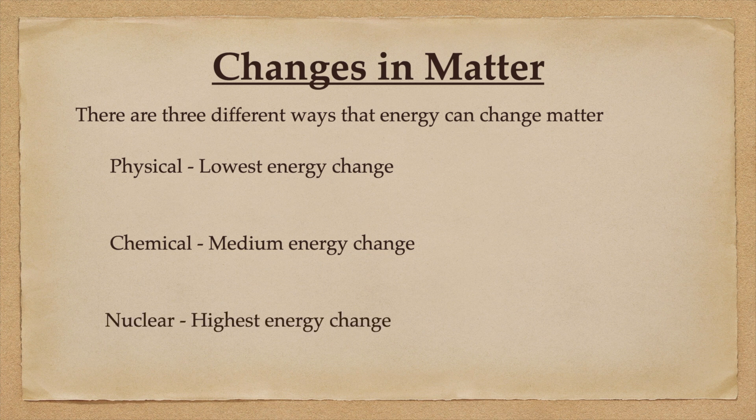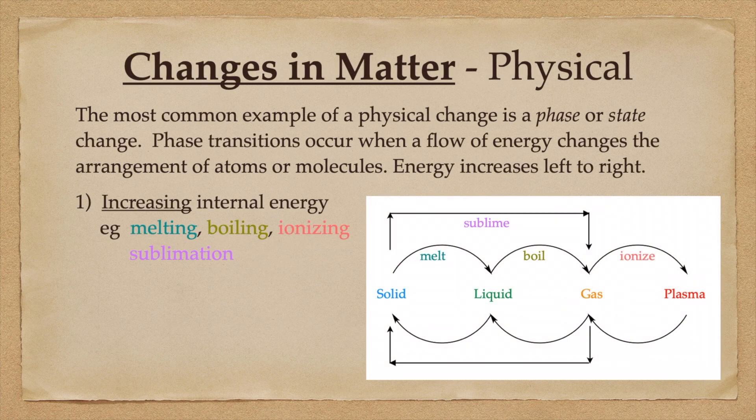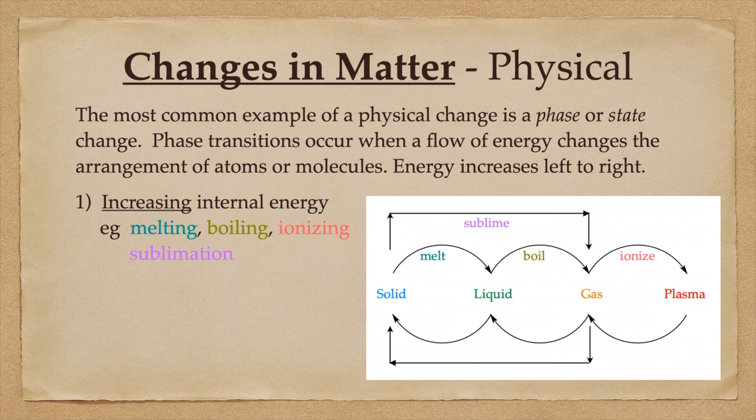In this course we will deal primarily with the chemical changes, but let's look at the physical and the nuclear just to clear them out of the way. The most common example of a physical change is a phase change or a state change. These are by no means the only kind of physical change, but they are the most commonly discussed.